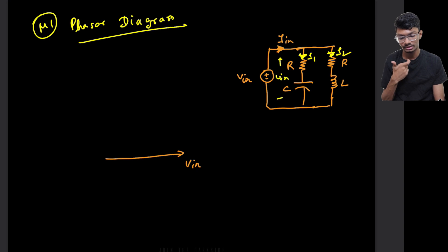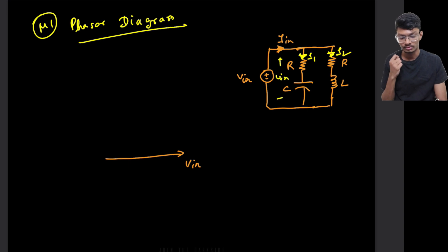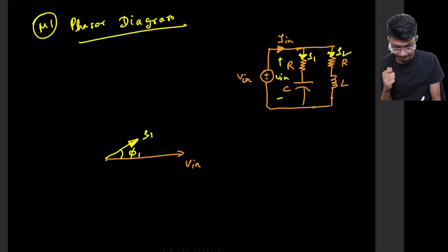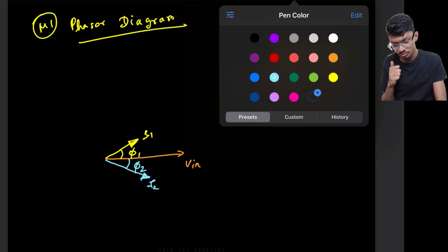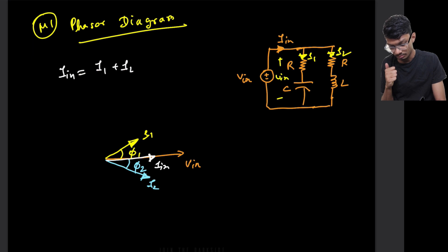Current I1 will lead Vin because there is a capacitance present — due to capacitance, current tends to lead the input voltage. Current I2 will lag the input voltage because there is an inductor present. So I1 leads by angle phi1 and I2 lags by angle phi2. The question requires the total Iin to be in phase with Vin, where Iin = I1 + I2.